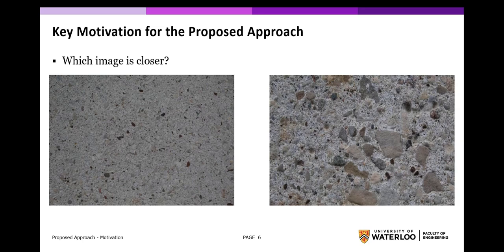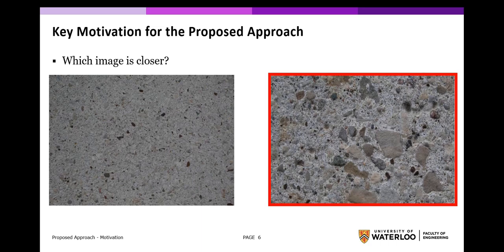The underlying motivation for this approach can be inferred from these two images, which are textured surfaces of the same structure taken at different distances. Can you tell which image is closer? Of course, it's the right image. In terms of image scale — the pixel per length metric — images taken further away have a lower pixel per length metric, 50 pixels per centimeter in the case of the left image, whereas closer images have a higher pixel per length metric, 250 pixels per centimeter in the right image.